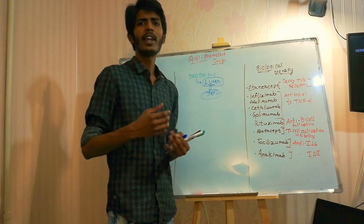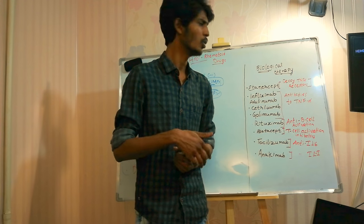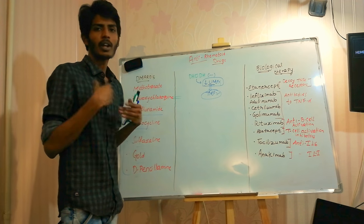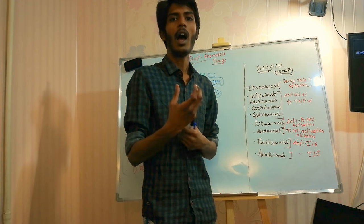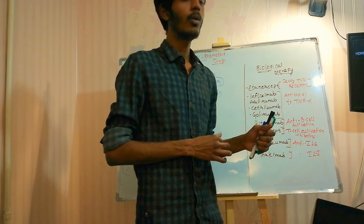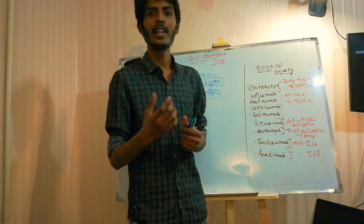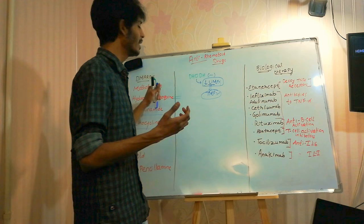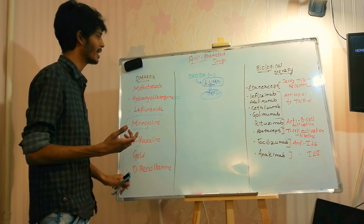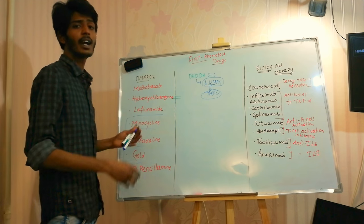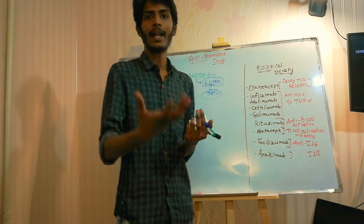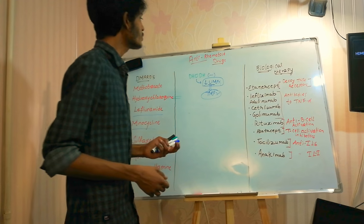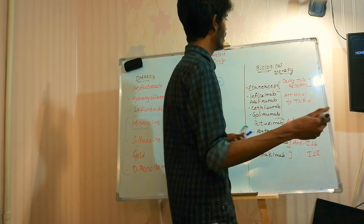When prescribing DMARDs, we add a corticosteroid alongside them. For example, if I give methotrexate, it will start to show its effect only after two to three weeks of administration. Until then, corticosteroids act as an immunosuppressant to bridge that gap. We should also monitor liver enzymes and watch for pancytopenia, as it can lead to recurrent bacterial infections.